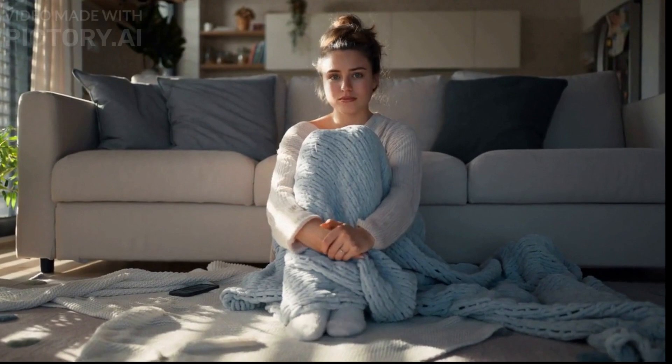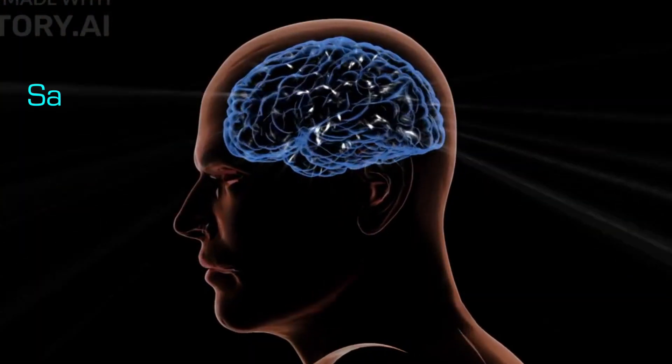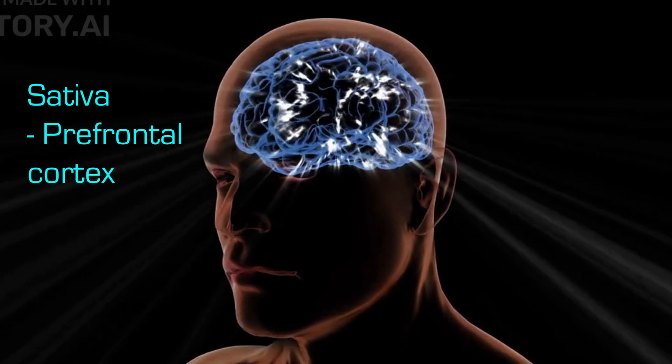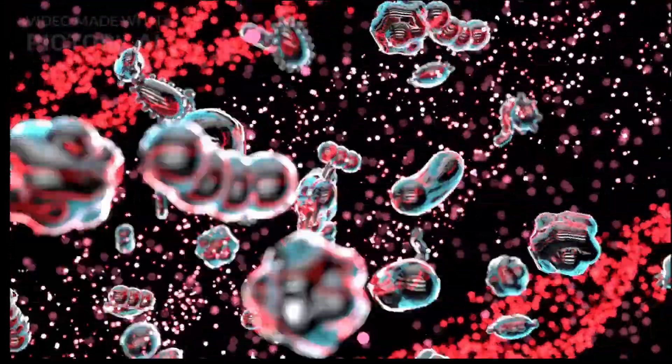Sativa varieties activate CB1 receptors in the prefrontal cortex, while indica varieties activate them in more stress-oriented limbic circuitry. The molecules in cannabis can often shift our brain towards a state of focus, elevated mood, and a heightened sense of importance.